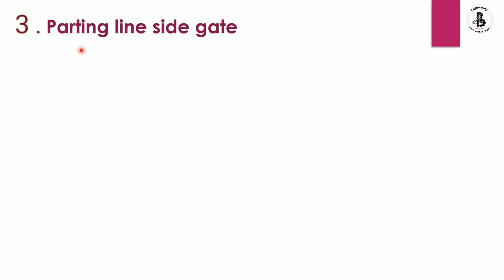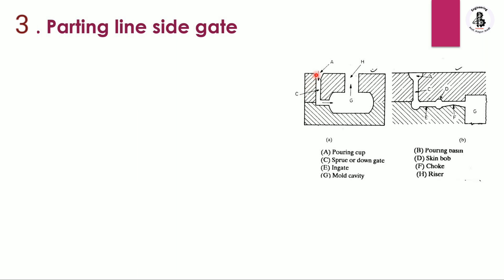The third type is the parting line side gate. The pouring cup is connected with the sprue or down gate, then the runners, and the molten metal enters from one side of the mold cavity. Because the metal enters from the side of the cavity and this side gate is located around the parting line, it is known as the parting line side gate system. Multiple arrangements are possible depending on requirements and the shape and size of the job.